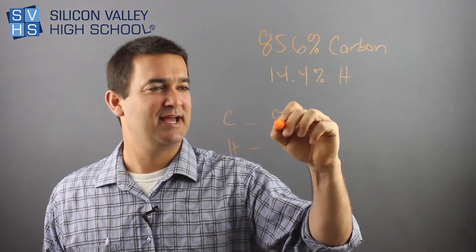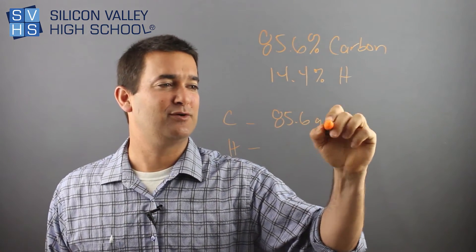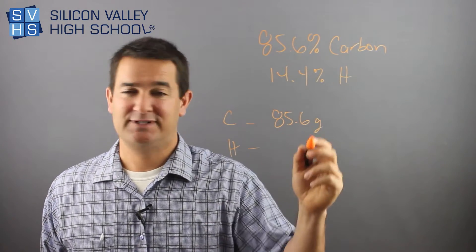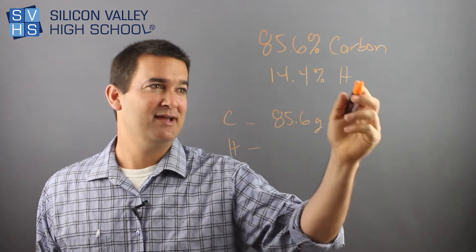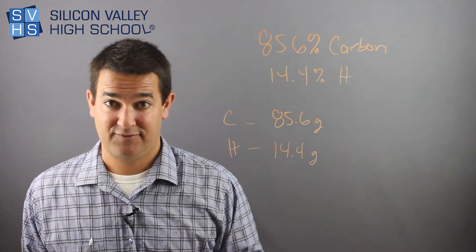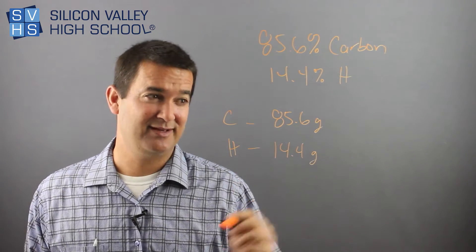we can change this to 85.6 grams. And that is 85.6 grams out of 100 grams. For hydrogen, we take this and we call this 14.4 grams. That's step one. If there was a third atom, we could do it down here and keep going.